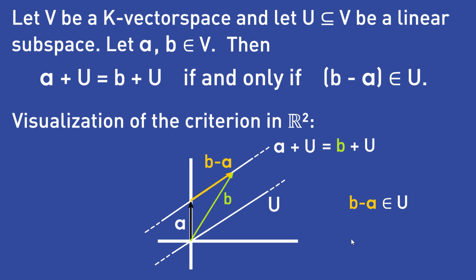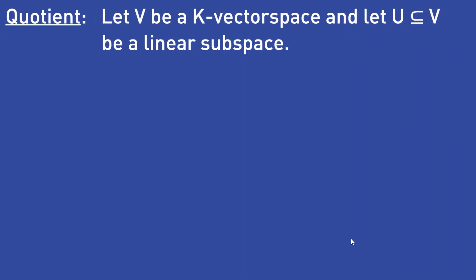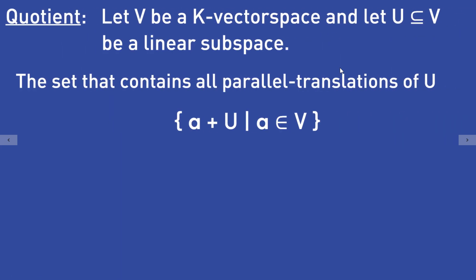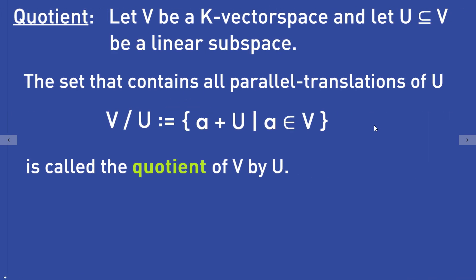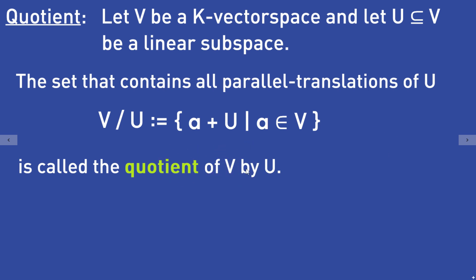Now we can finally define the quotient space v by U. Let v be a k vector space and let U be a linear subspace of v. The set that contains all parallel translations of U — that is, all sets a plus U for a in v — is called the quotient of the vector space v by the linear subspace U, denoted V/U.